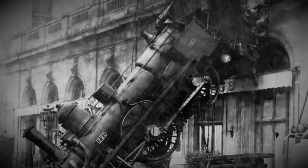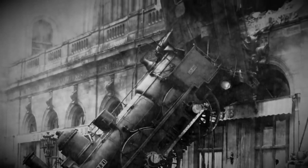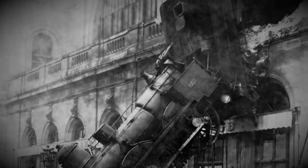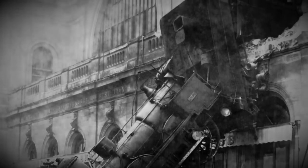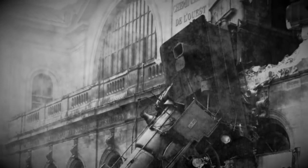The Swiss cheese model likens human systems to multiple slices of cheese, stacked side by side, in which the risk of threat becoming a reality is mitigated by the differing layers and the types of defenses which are layered behind each other.